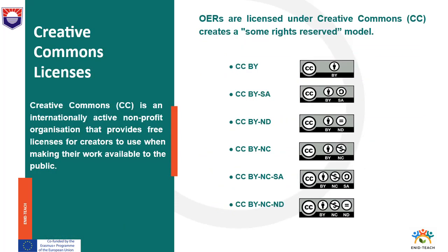When an author creates content it is automatically copyrighted as all rights reserved, even if there is no copyright symbol displayed. To grant permission to others to reuse, remix, revise and redistribute materials, the copyright holder must apply for an open license. OERs are licensed under Creative Commons. CC creates a 'some rights reserved' model where the copyright owner retains copyright ownership in their work while allowing certain uses of their work by the public. There are four license elements which are mixed to create the following six CC licenses.